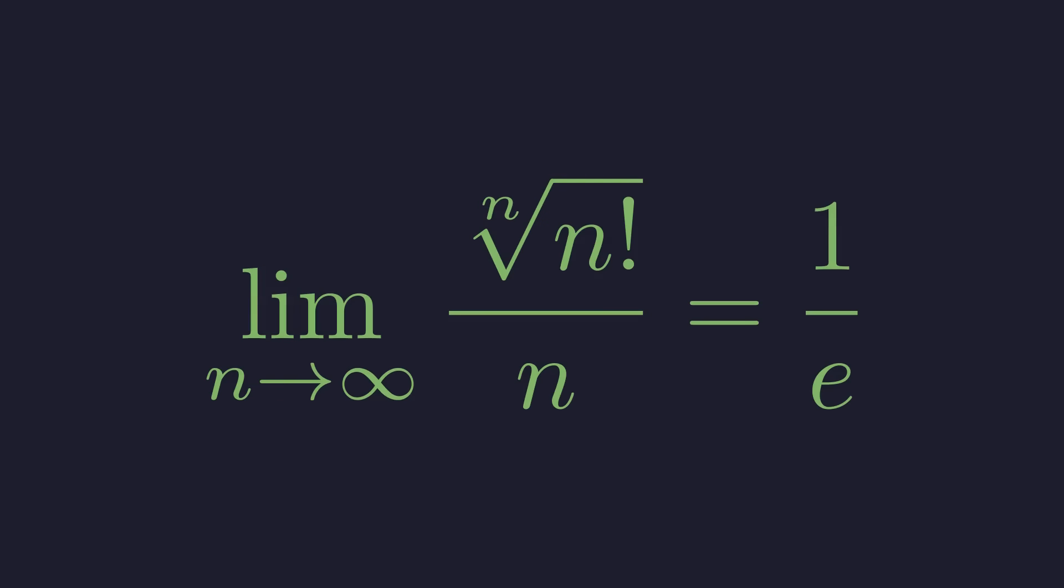We have the value of the integral. Let's put everything back together to find our original limit, L. We established that the natural log of L equals the integral we just solved. So, the natural log of L equals negative 1. To find L, we just need to solve this equation by exponentiating both sides using base e. E to the power of the natural log of L is simply L by definition of the logarithm. And so, after that incredible journey through logarithms and calculus, we find that the value of our original limit is 1 over e.